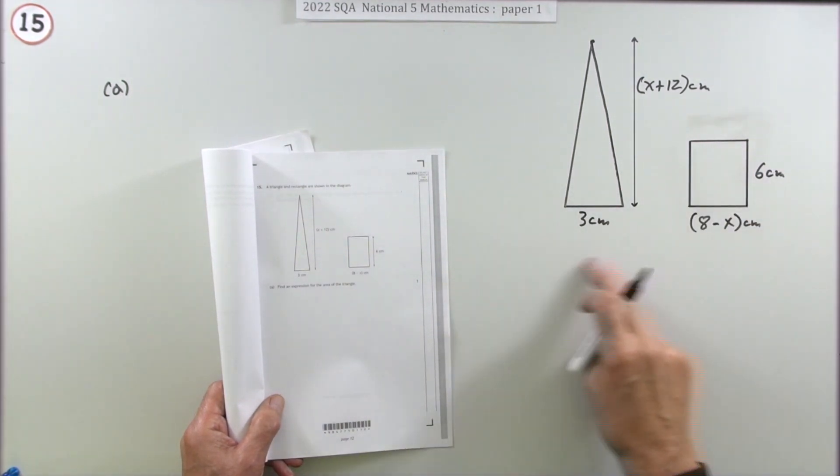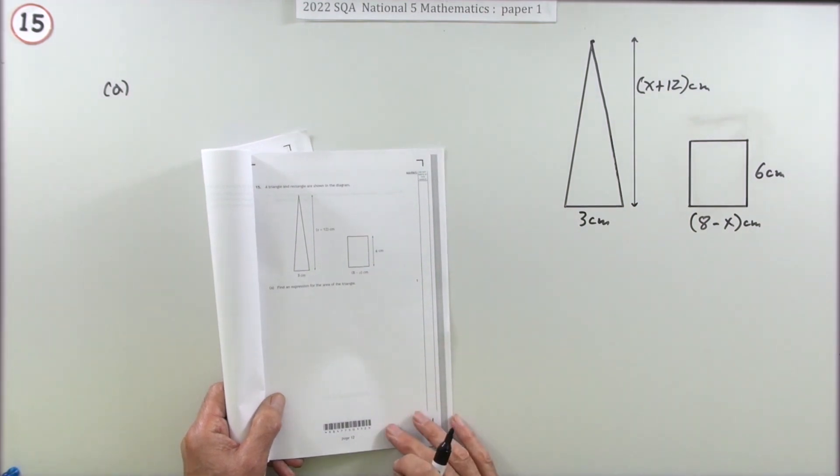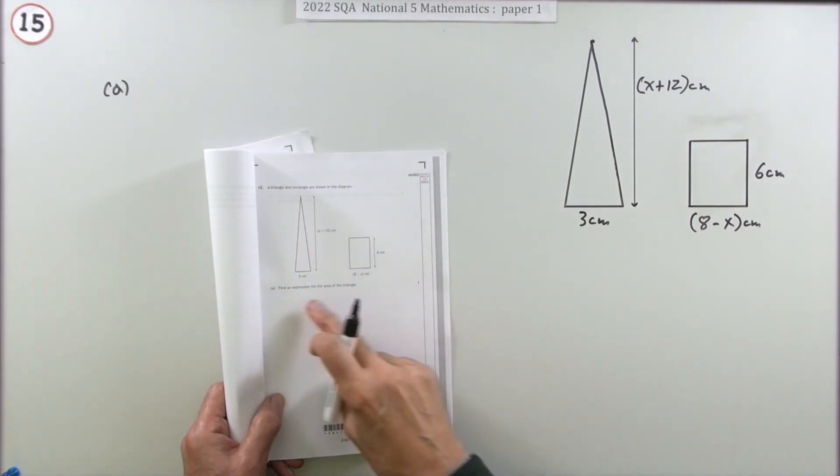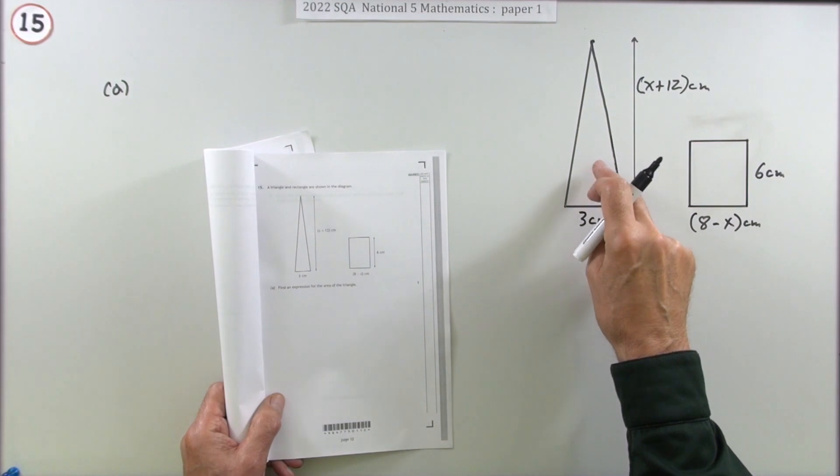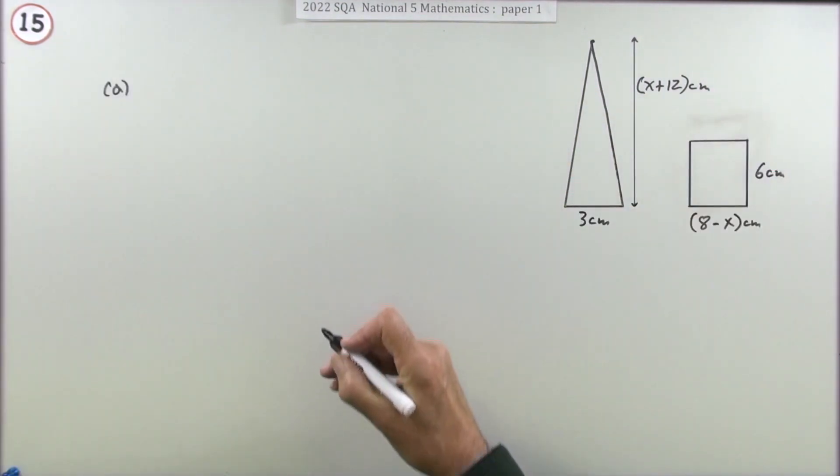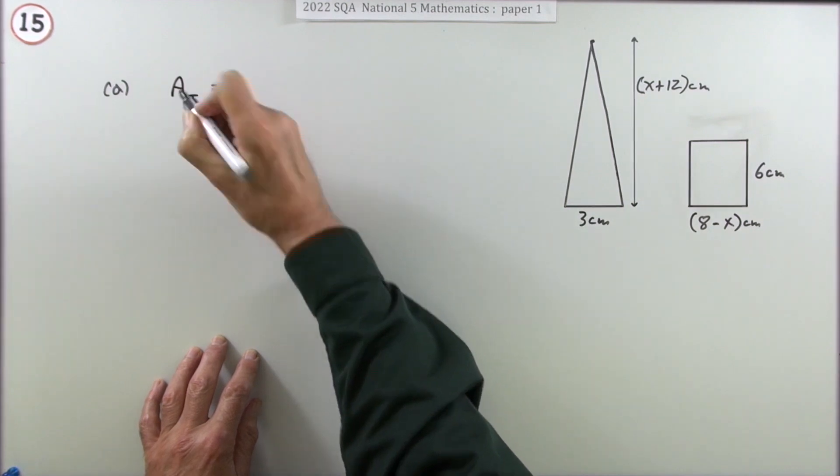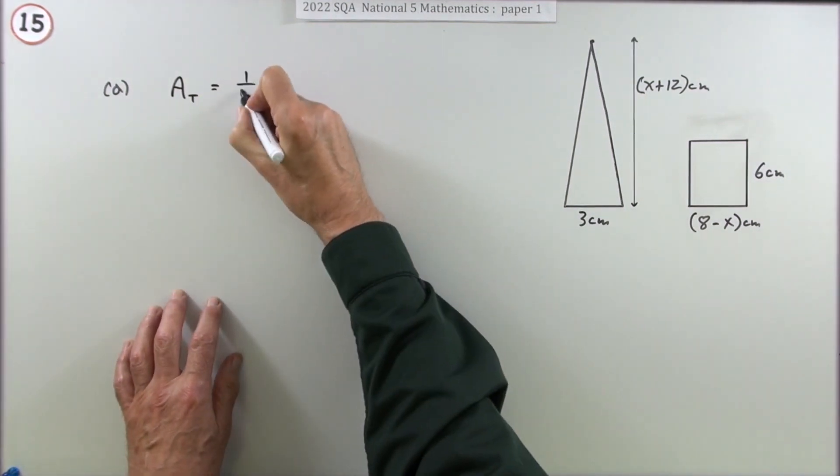Equate those two expressions which will give you an equation and solve it. But it breaks it up. First part, for one mark, just what's the area of the triangle? Well, the area of a triangle, we'll just put a wee T for the triangle, is half base times height.